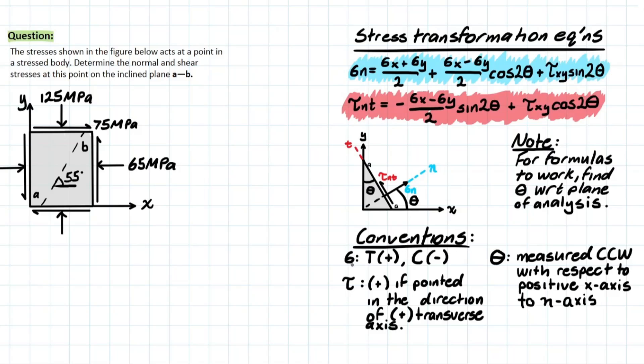Now the conventions we need to follow are as follows. We need to consider that the stress normal is going to be positive tensile and then negative if compressive. And for shear stress, we are going to be considering it positive if it's pointed in the direction of a positive transverse axis. So if we look at the shear stress on this face, it is acting positively because it is parallel and moving in the same direction as this y-axis. And then similar with the x, so we're going to have a positive 75 MPa for that shear stress in the calculations.